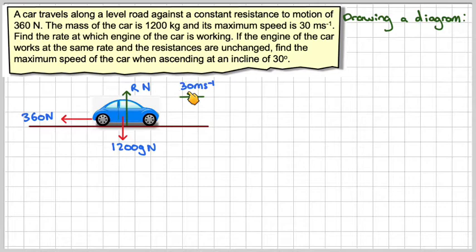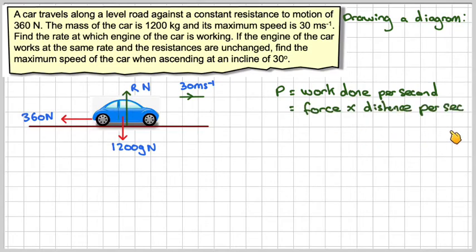It will have a speed of 30 meters per second. It will be moving along. Now, power is work done per second, which means force times the distance moved per second, which is going to be F times V.